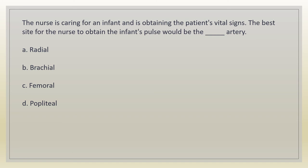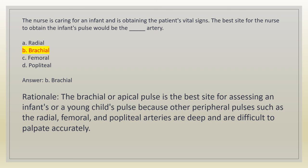The best site for the nurse to obtain the infant's pulse would be the blank artery. a. Radial. b. Brachial. c. Femoral. d. Popliteal. Answer: b. Brachial. Rationale: the brachial or apical pulse is the best site for assessing an infant's or young child's pulse because other peripheral pulses such as the radial, femoral, and popliteal arteries are deep and difficult to palpate accurately.